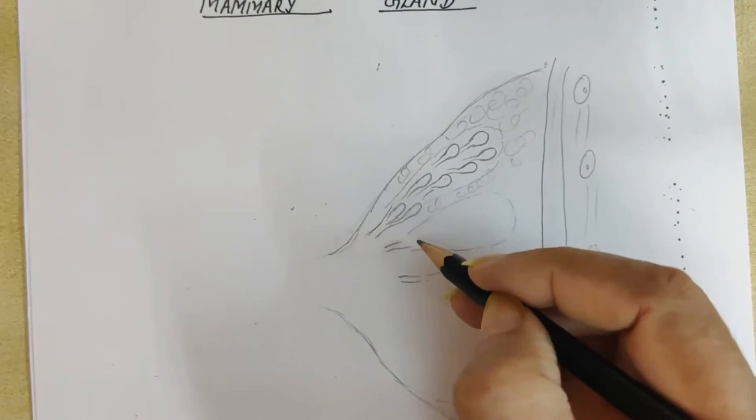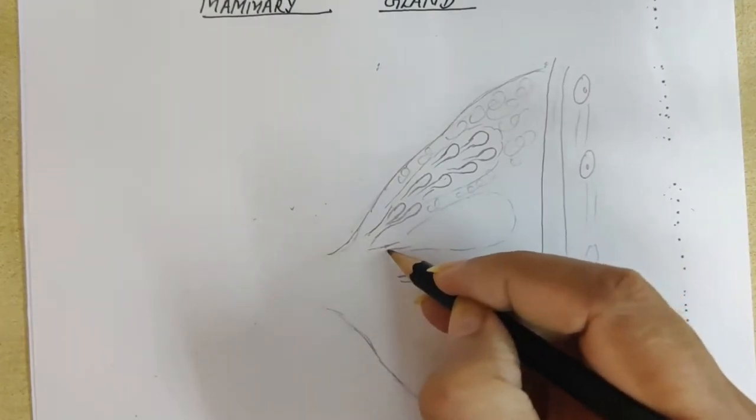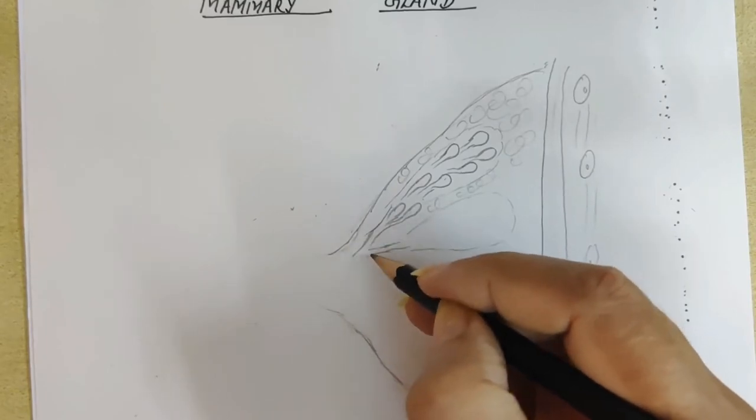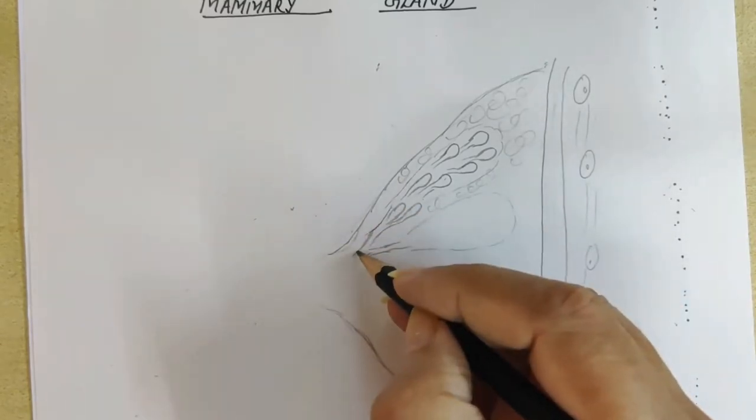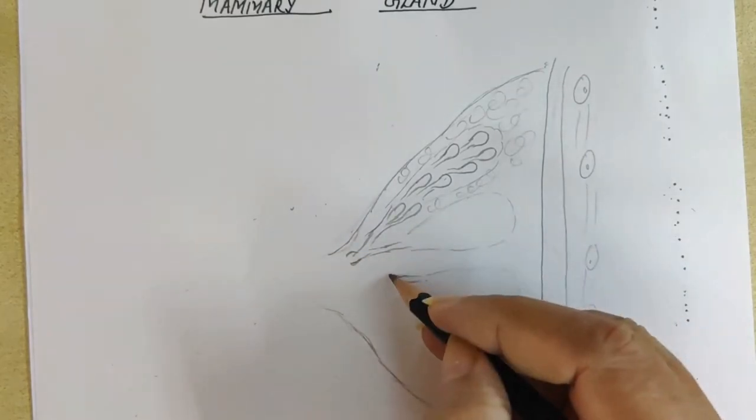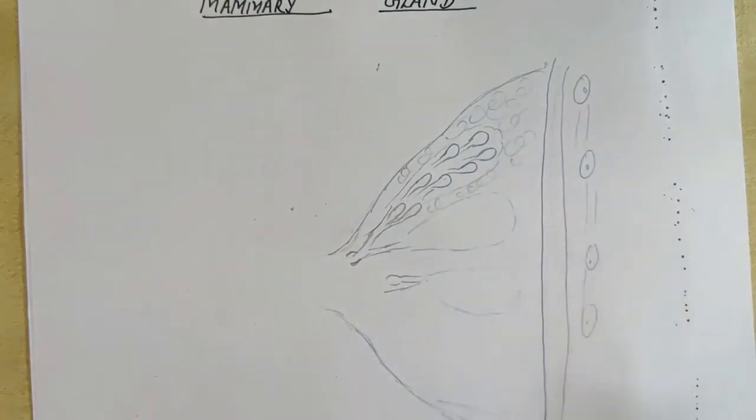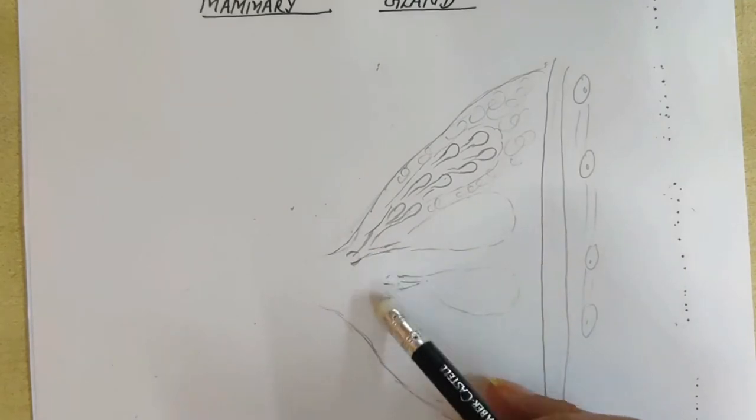As mammary ducts move ahead, they will be joining each other. Then comes a little wider portion called the ampulla, the mammary ampulla. You can make it little ahead of it. Just draw some mammary ampulla.